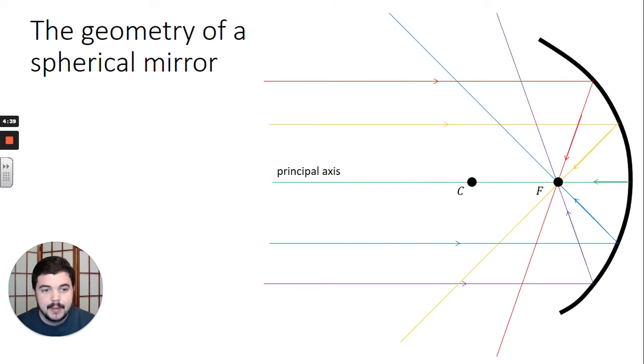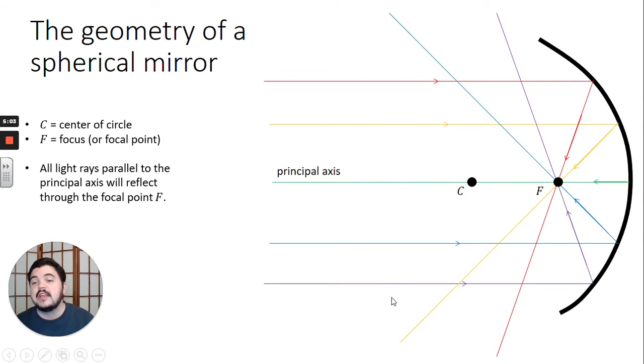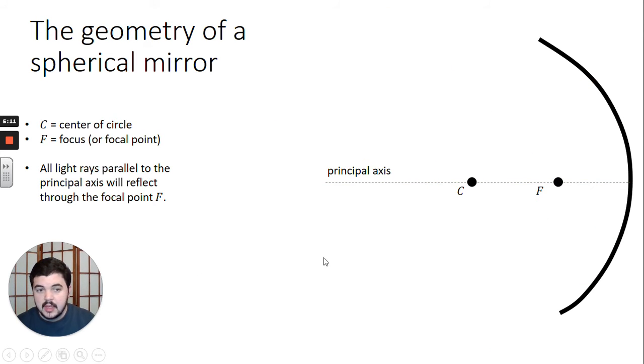Getting rid of a little bit of the background now so we can talk about some more things. This green line that goes through both the center of our spherical mirror and the focal point, this is called the principal axis for this mirror. So some labels: capital C is the center of the circle, capital F is the focus, also known as the focal point, and then all light rays that are parallel to our principal axis will reflect back through the focal point F.